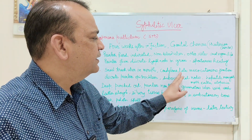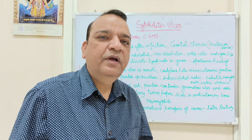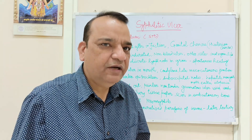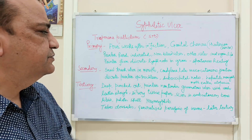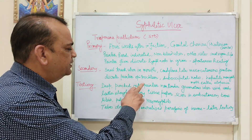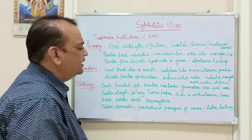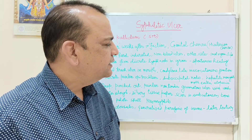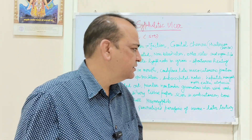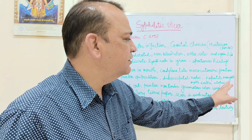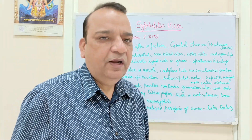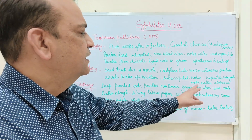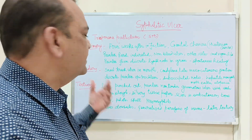One has to differentiate between condyloma lata and condyloma acuminata. Condyloma acuminata are caused by the human papilloma virus — they are warts or genital warts. The lymph nodes in secondary syphilis are discrete and painless, involving the epitrochlear and suboccipital regions. Other manifestations include hepatitis — inflammation of the liver — meningitis, and moth-eaten alopecia, meaning patchy hair loss on the scalp, which is characteristic of the secondary stage.